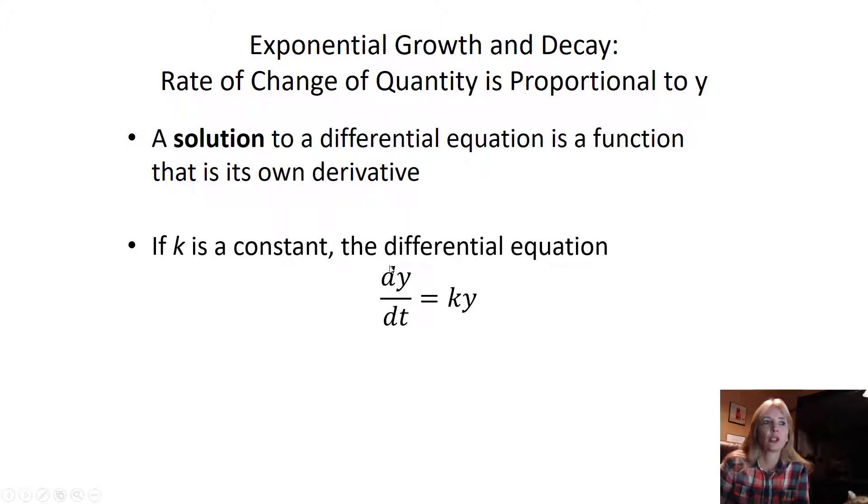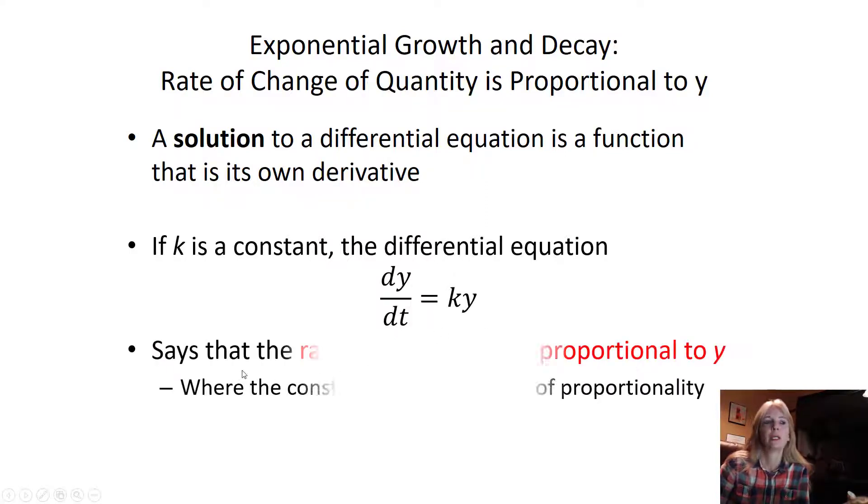The very last lecture we talked about if we had a constant, so k being a constant, k times y, the change in y over the change in t. Typically in all of our examples this is going to be change in time. It tells us that the rate of change of y is proportional to y. So k we typically call the constant of proportionality.